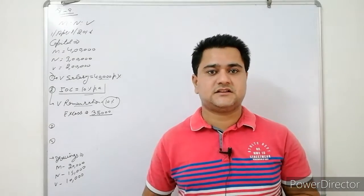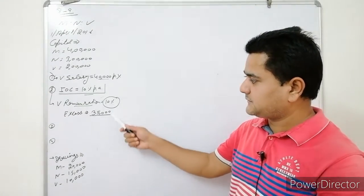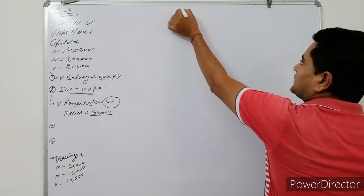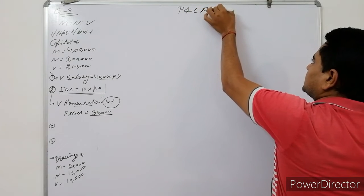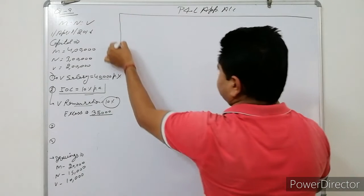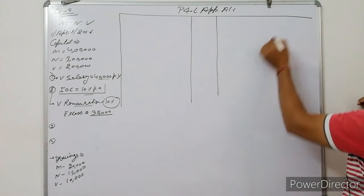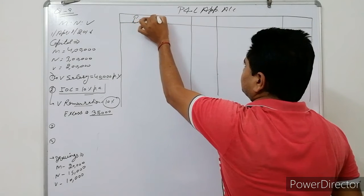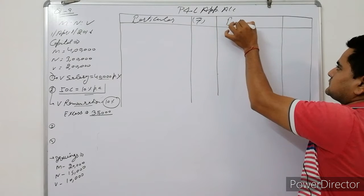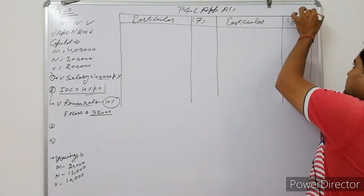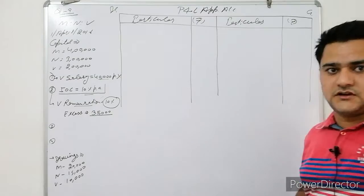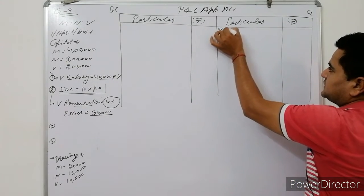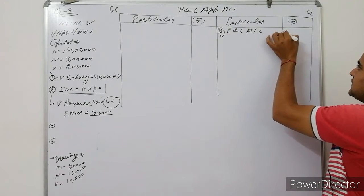We need to make two things: appropriation account and capital account. Let's start the Profit & Loss Appropriation Account. The profit given in the question is Rs.3,30,000, which comes on the credit side as 'By P&L Account: 3,30,000.'